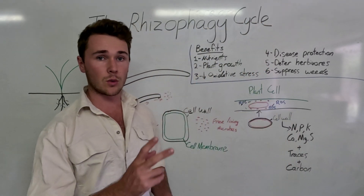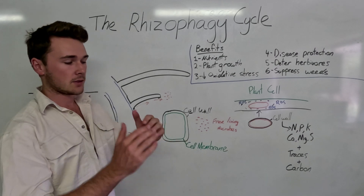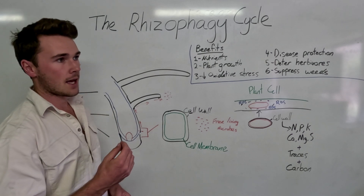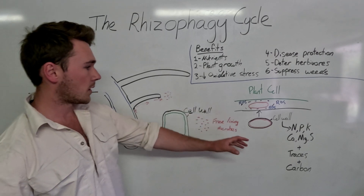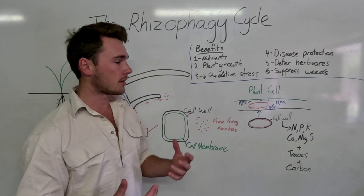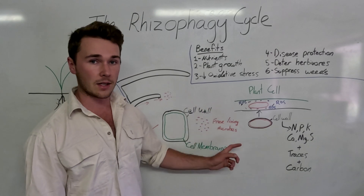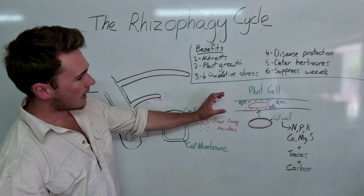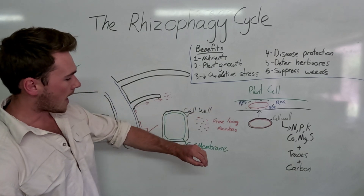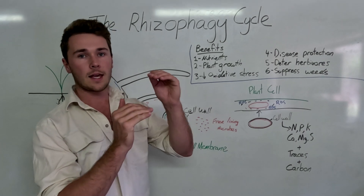A plant cell on the exterior has two main layers: the cell wall, which is the very external part, and then the cell membrane — those two layers are side by side. Now it's during this process of cell division that, for some unknown reason, microbes can actually enter into the cell wall. Whether bacteria or fungi — those are the two typical microbial groups that participate in this cycle — they enter in between the cell wall and the cell membrane, but not into the internal part of the plant.